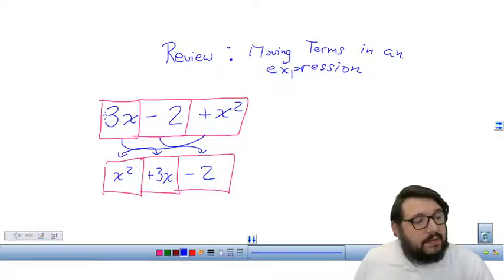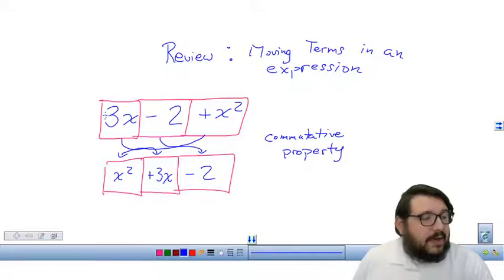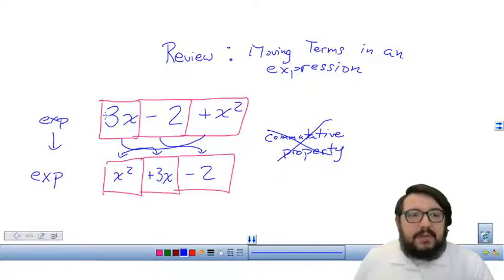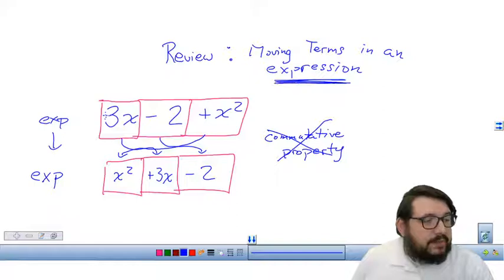And just to remind you, this technically is called the commutative property. Mathematics is very old so that's why the word commutative property sounds really old-fashioned and kind of alien to us. But you don't have to remember that name. You just have to remember that you're allowed to move terms around from one expression and you can basically recreate the same expression as long as you have the same terms. The order is not important.